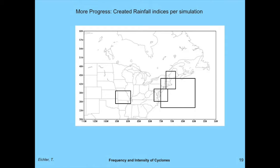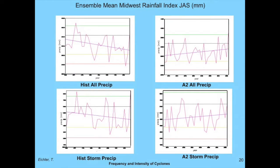I computed rainfall in each box by summing all grid-box values at one-half degree resolution, saved by season for every year. Looking at the Midwestern Index: top left is historical for all rainfall, top right is A2 for all rainfall. I'm showing two standard deviations above, one above, one below, two below, along with a regression line. In the all-precipitation historical plot, there's a tendency toward drying or lowering precipitation — some of this is because the historical period itself shows some warming, so there's associated drying.